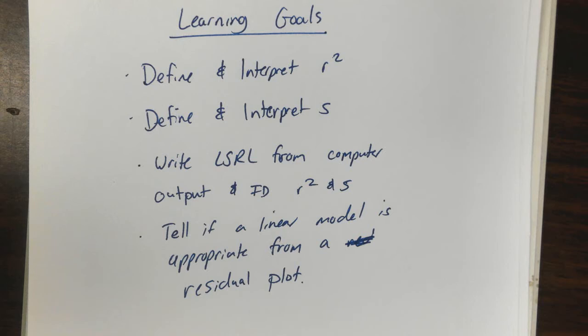Hey guys, it's Mr. Mack, and today we're going to be talking about how to interpret R squared and S, and then make sure you understand how to identify all the parts of the least squares regression line from computer output, because that is expected on the AP exam. Then we'll cover how to tell if a linear model is appropriate from a residual plot, which is really easy—you just look at it and decide if it's linear.